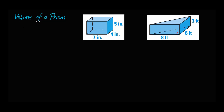Volume of a prism. We've been talking a lot about area. Area, we had said, is the amount of space that an object occupies. For volume, we're going to talk about how many cubic units fit inside of this box.